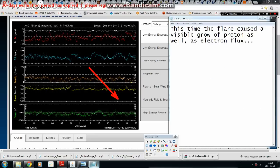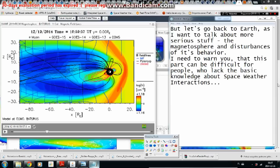This time the flare caused a visible growth of protons as well as electron flux. But let's go back to Earth as I want to talk about more serious stuff. The magnetosphere and disturbances of its behavior. I need to warn you that this part can be difficult for people who lack the basic knowledge about space-weather interactions.